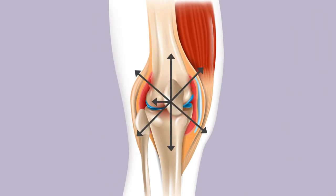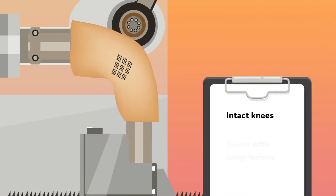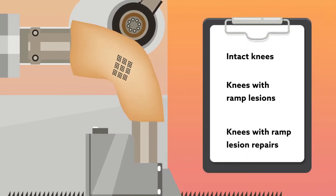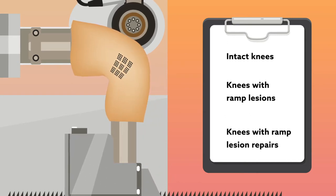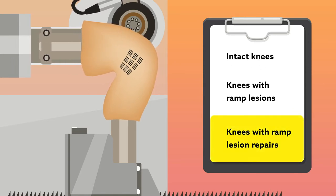To remedy that, researchers from the University of Pittsburgh recently used a robotic system to examine these forces in intact knees, knees with ramp lesions, and knees with ramp lesion repairs. Their findings, reported in the November issue of the American Journal of Sports Medicine, suggest that the indications for ramp lesion repair may be limited.